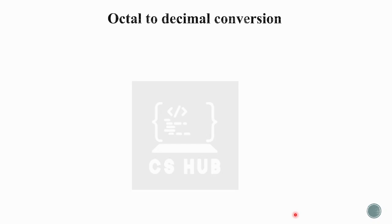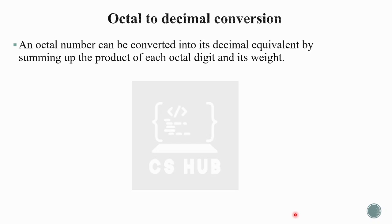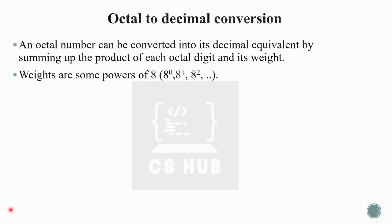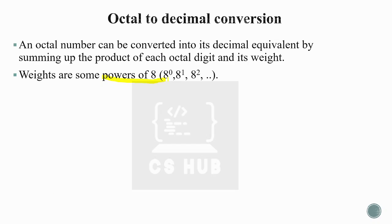Next, converting an octal number to decimal. The method is almost identical to the previous method — the only difference is the weights. For an octal number, the weight of each digit is a power of 8, because the base is 8. So the weights are 8 raised to 0, 8 raised to 1, 8 raised to 2, and so on. Summing up the products of each octal digit and its weight gives the decimal equivalent.